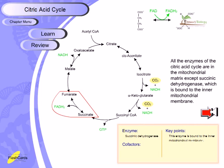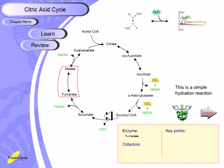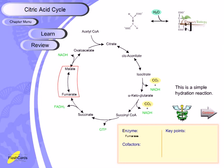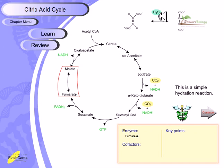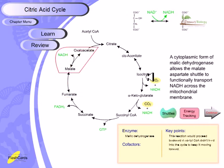The next step converts fumarate into malate, and this step is also reversible. Fumarate has a trans orientation and water is added to break the double bond between the carbons, producing a linear four-carbon molecule called malate or malic acid. This is a straightforward hydration reaction: water comes in, breaks the double bond, and produces the linear form of malate.